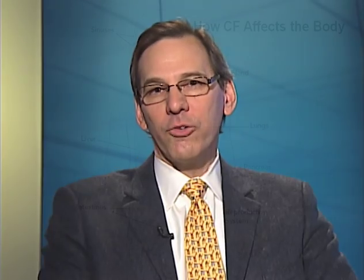This elevated sweat salt is used as a diagnostic test for cystic fibrosis. The GI tract, comprised of the pancreas, intestines, and liver, are also affected in CF. About 80% of patients with cystic fibrosis will have pancreatic insufficiency because the small ducts in the pancreas are blocked and destroyed, and pancreatic enzymes are not produced to digest food. Severe liver disease can occur in a small percentage of patients as well.